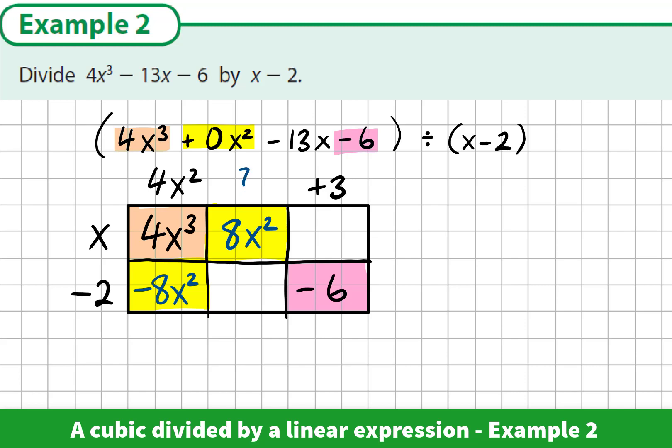Now we're ready to divide. x by what would give me 8x squared? x divides into 8x squared 8x times. So this is our solution. We have the answer already. The quadratic factor is 4x squared plus 8x plus 3.